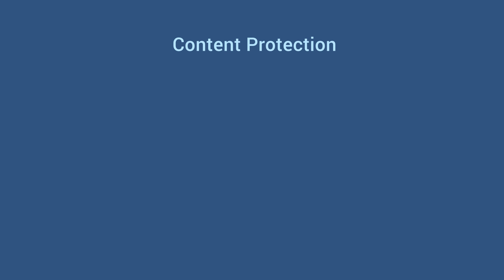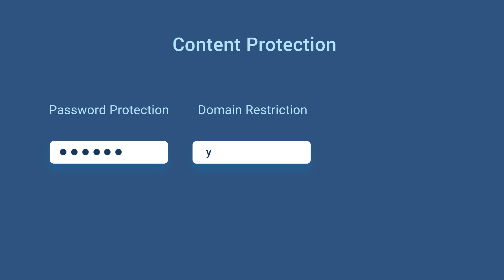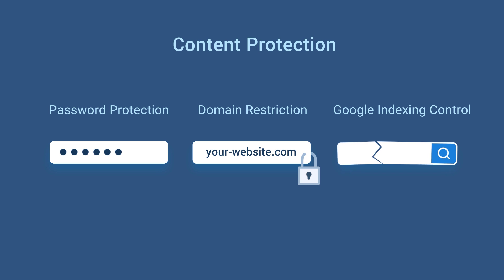Now you have three security options. First, you can password protect your internal reports and newsletters, so only select viewers will see them online. Second, you're in charge of where your document can be embedded. Make your content available on specified domains only. Third, you can manage content discoverability and decide whether or not your documents should appear on search engines.